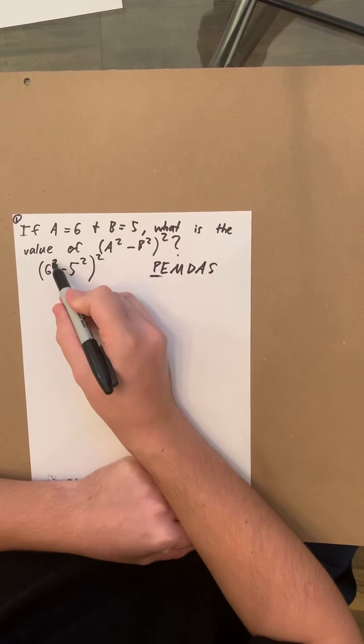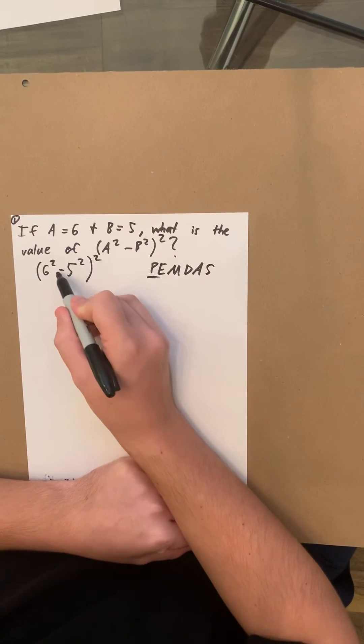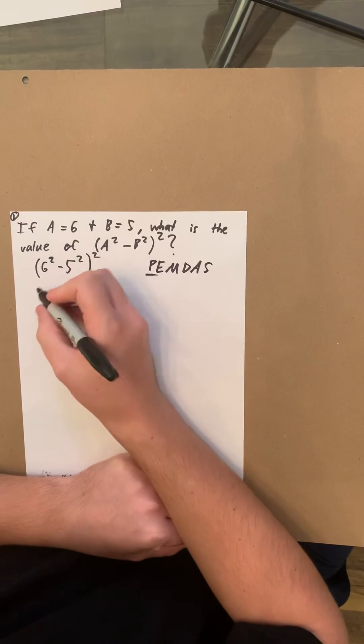Next is E for exponents, so you're going to do the exponents first and then subtract, which is the last letter.